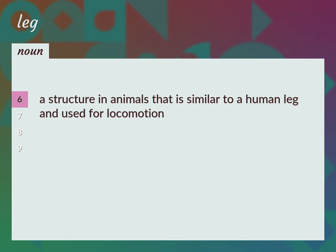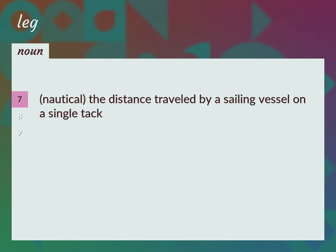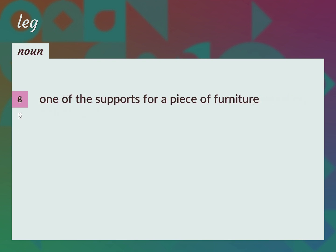A structure in animals that is similar to a human leg and used for locomotion. Nautical: the distance traveled by a sailing vessel on a single tack. One of the supports for a piece of furniture. The limb of an animal used for food.